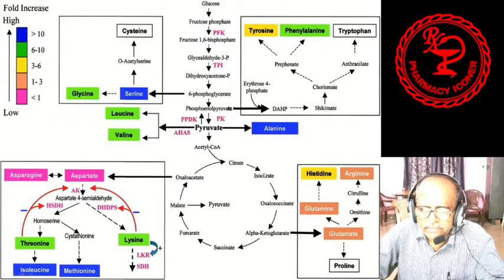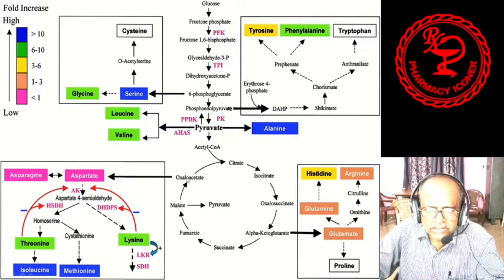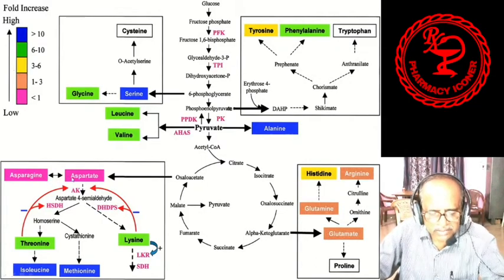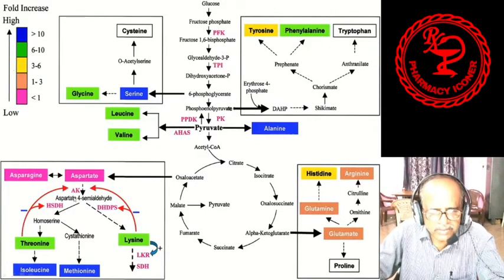In the TCA cycle, oxaloacetate cycles back to form citric acid. From oxaloacetate, aspartate is formed. Aspartate and asparagine undergo reversible interconversion — aspartate forms asparagine and asparagine converts back to aspartate. From aspartic acid, with the help of the enzyme AK (adenylate kinase), aspartate semialdehyde is formed.